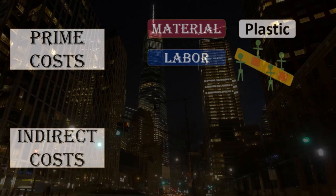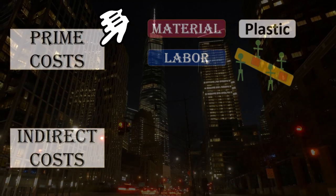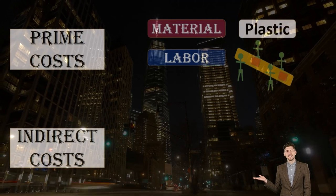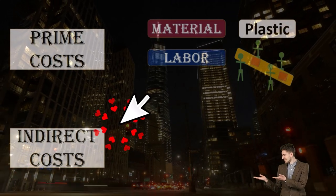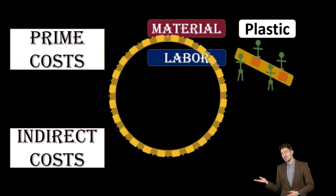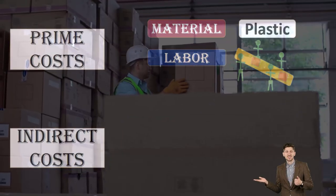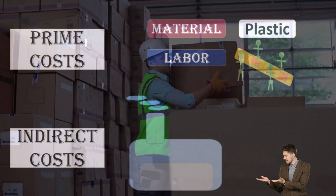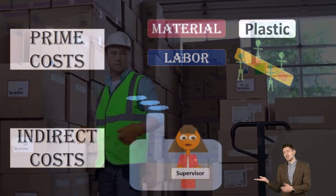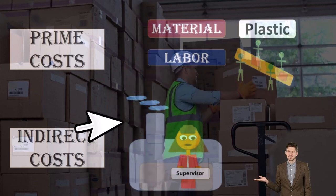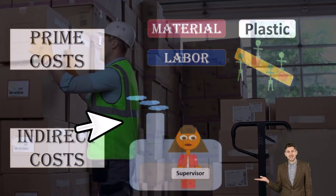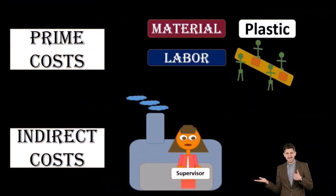Those items that are not prime costs are going to be those that we cannot tie directly to the production process. We might have indirect costs, which are part of the inventory, but which we can't tie directly to any particular job or process. Those things include things like the factory — whether it be the rent or the depreciation on the factory — or a supervisor's salary, because the supervisor may be supervising many different jobs or many different product processes.